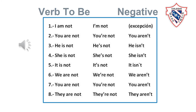Now we are going to learn the negative form. I am not — no contraction here. You are not, or you aren't. He is not, or he isn't. She is not, or she isn't. It is not, it's not, or it isn't. We are not, or we aren't. You are not, or you aren't. They are not, or they aren't.